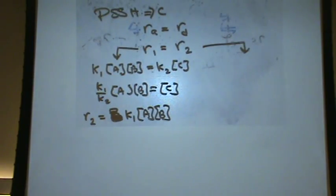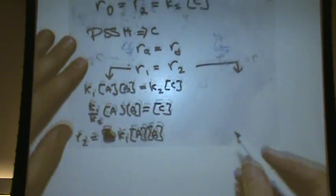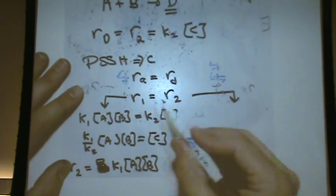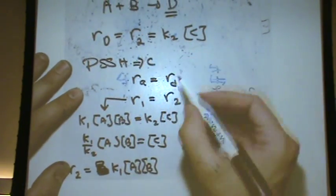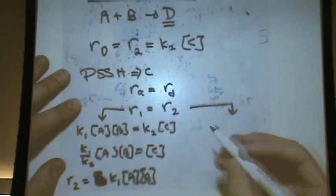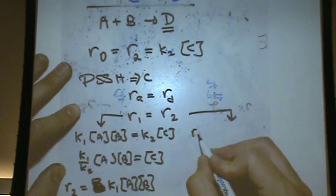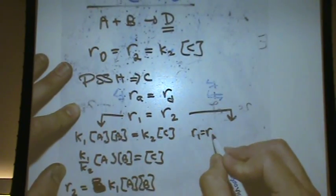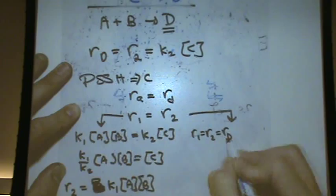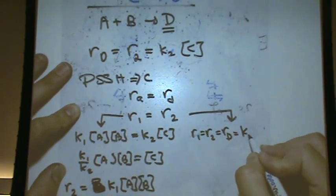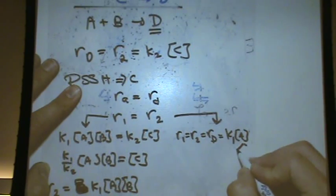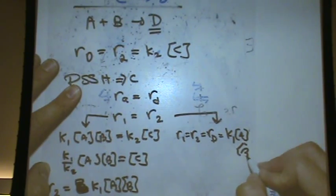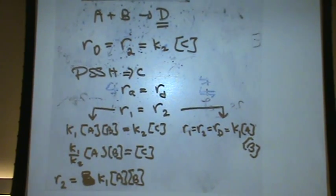That could be your answer. There's an easier way you could have done it. You could have said rate 2 equals rate 1. If I'm looking for rate 2, it's equal to rate 1, so rate 1 should be my answer. Rate 1, which equals rate 2, which equals the rate of production of D, is just K1 times A times B. The way you went about getting to the answer is totally fine.